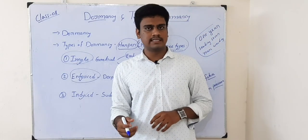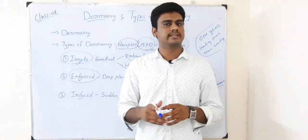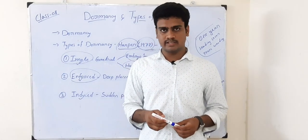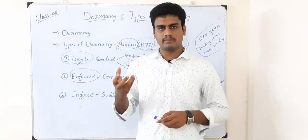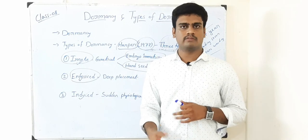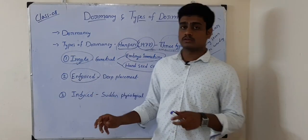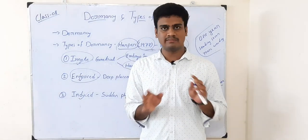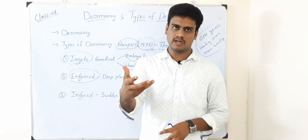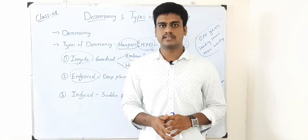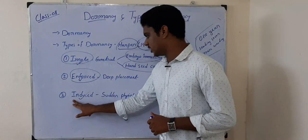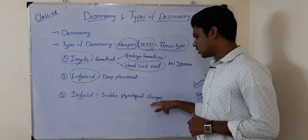If a seed doesn't germinate because of genetical changes, that we call innate dormancy. Enforced dormancy is when weed seeds are deeply placed in the soil and are unable to germinate. When we plow the field, the uppermost layer of the soil where seeds are present will go to the lowest layer, where they cannot germinate — that we call enforced dormancy. Though going to deeper layers, they don't lose their viability; they are still alive. When we plow again, they come to the topmost layer and start to germinate.